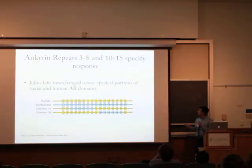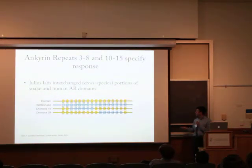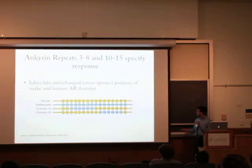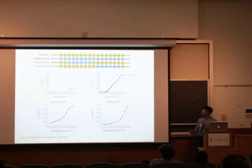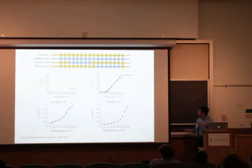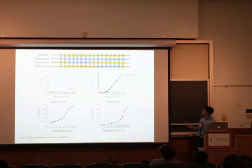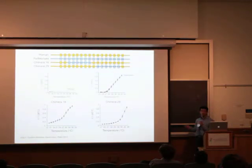The David Julius lab at UCSF interchanged cross-species portions of snake and human ankyrin domains. They took ankyrin repeats 2–8 of the rattlesnake and replaced them with those of the human, and then took ankyrin repeats 10–15 and replaced them in another construct with those of the human. So they now had TRPA1 with ankyrin repeats 3–8 of the rattlesnake against a background of mostly human ankyrin repeats, and another construct for repeats 10–15. They did the same temperature experiment and saw that for both constructs, the current change based on temperature was almost the same as cells containing entirely rattlesnake ankyrin repeats, suggesting that ankyrin repeats 3–8 and 10–15 specify the temperature response.